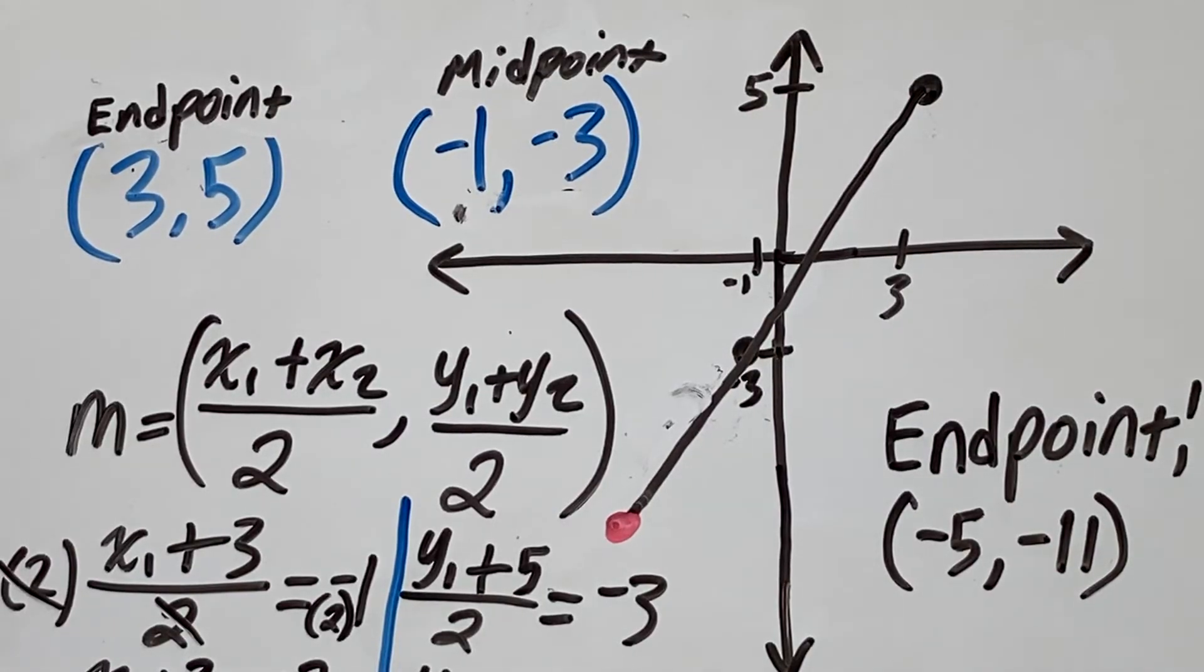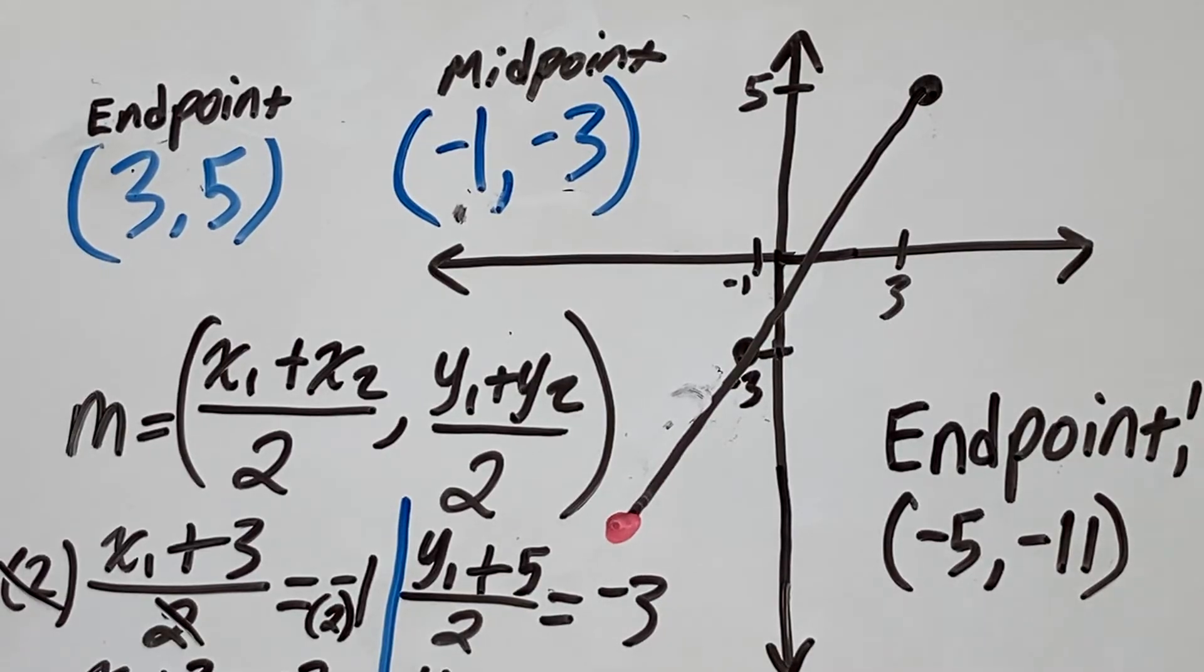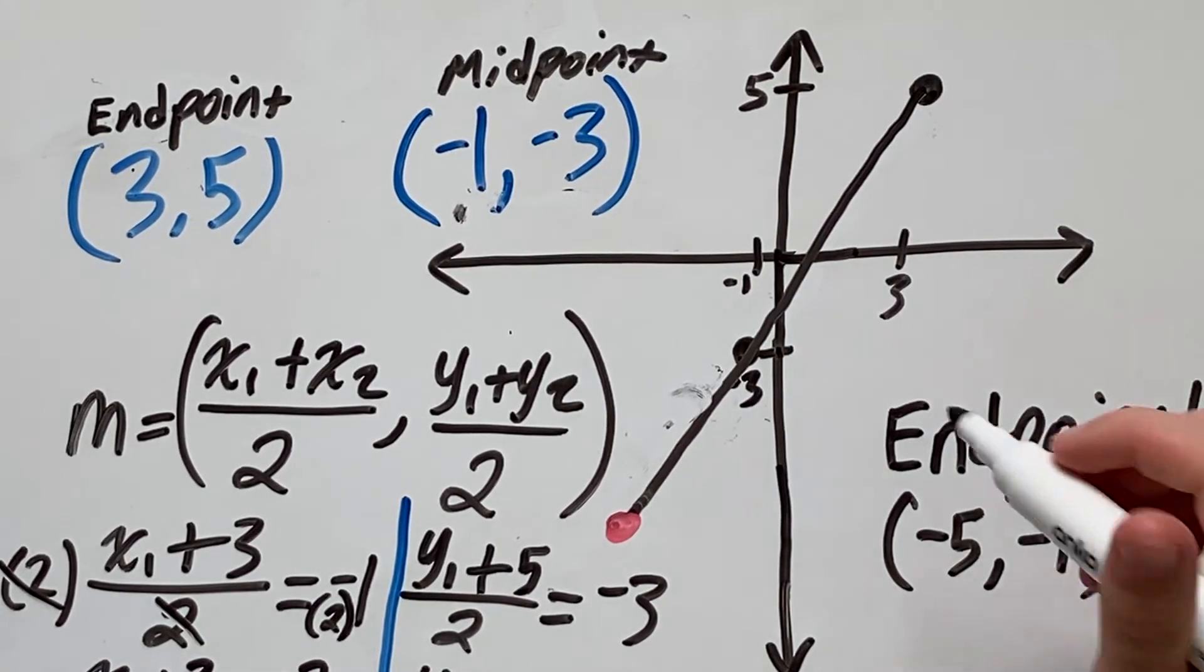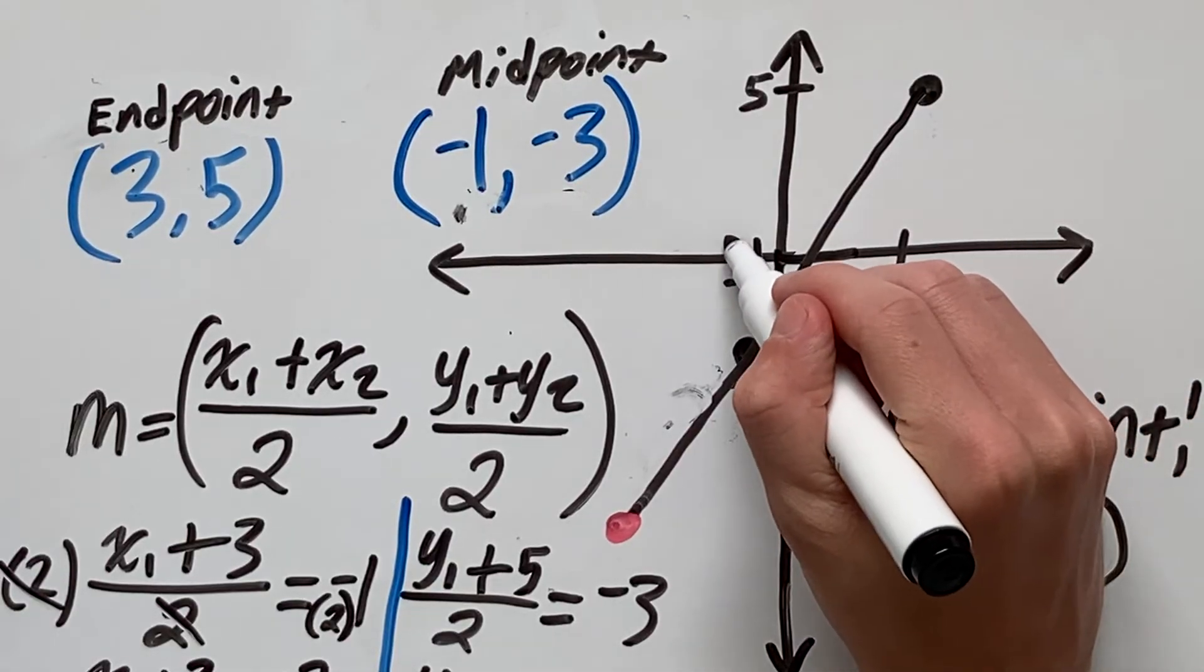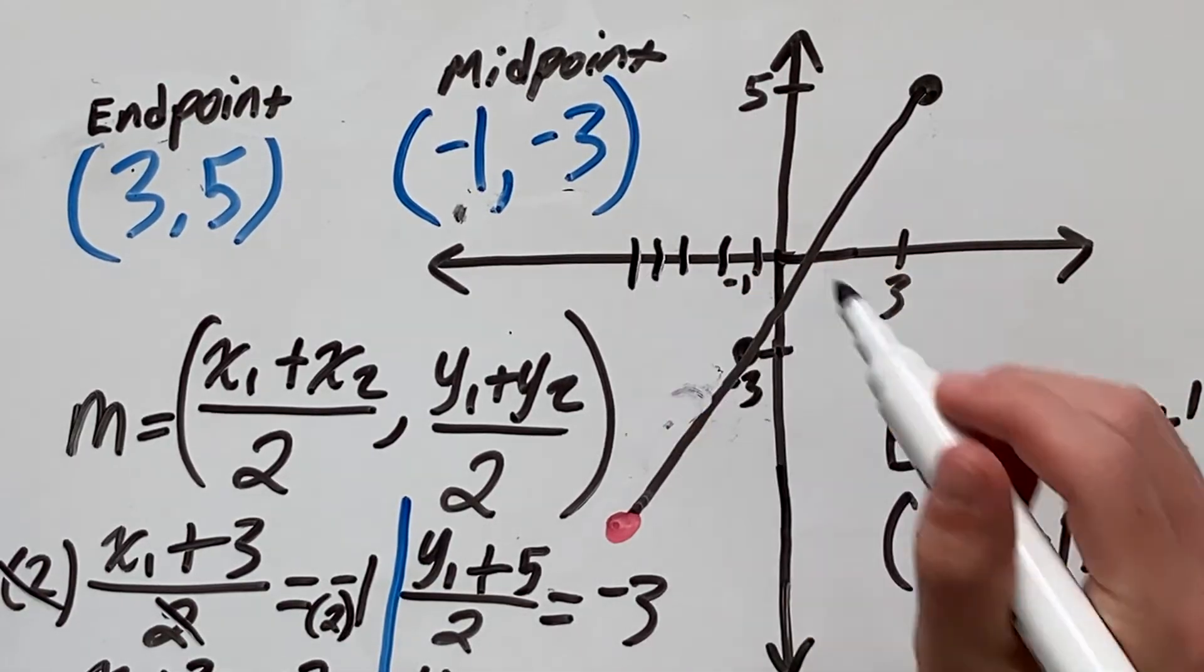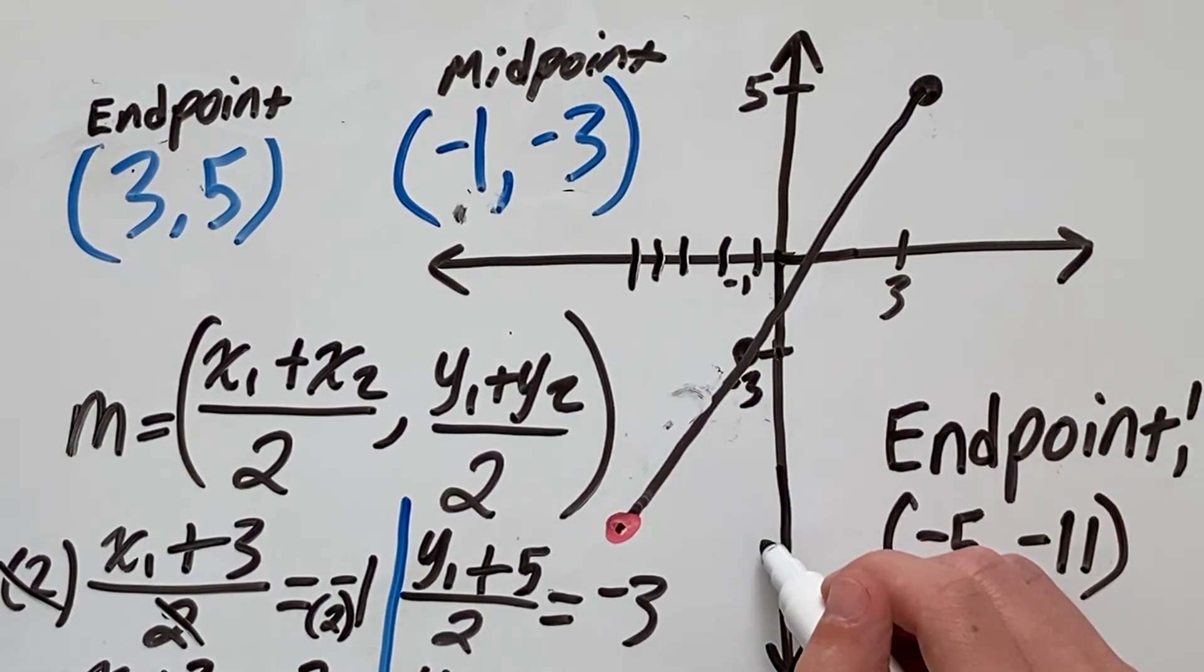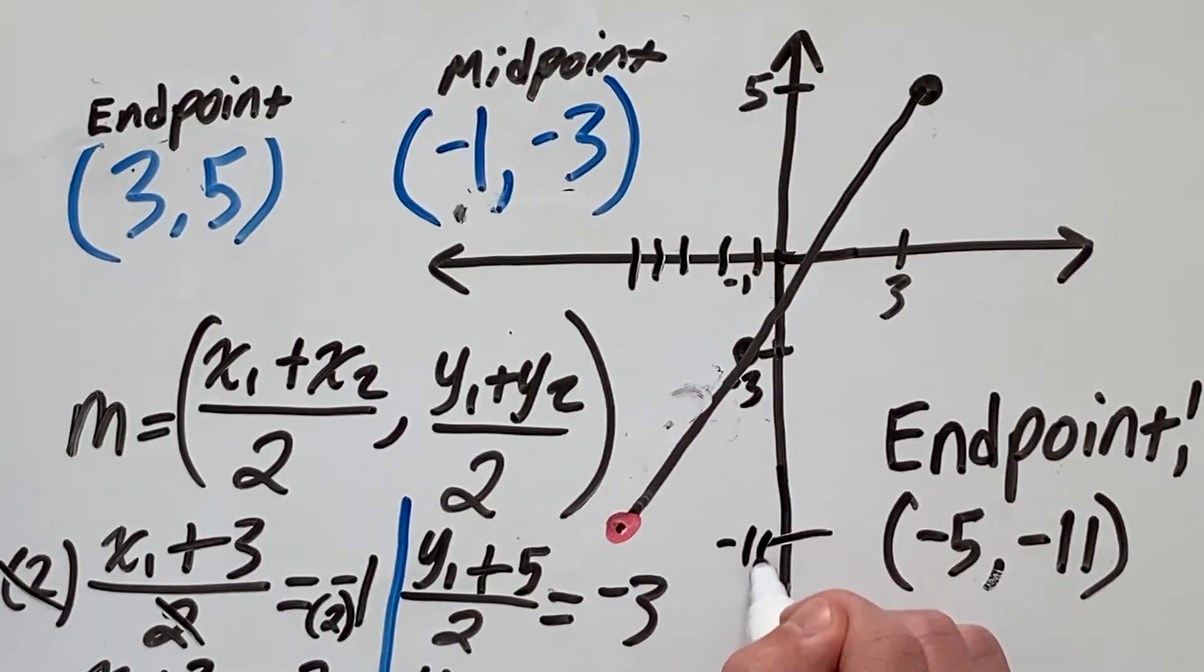Now that we have our endpoint of negative 5, negative 11, we can go back to our graph. And if we go negative 5, so negative 1, 2, 3, 4, 5, that comes down to our endpoint and negative 11 will be about here. And that also lines up with our endpoint.